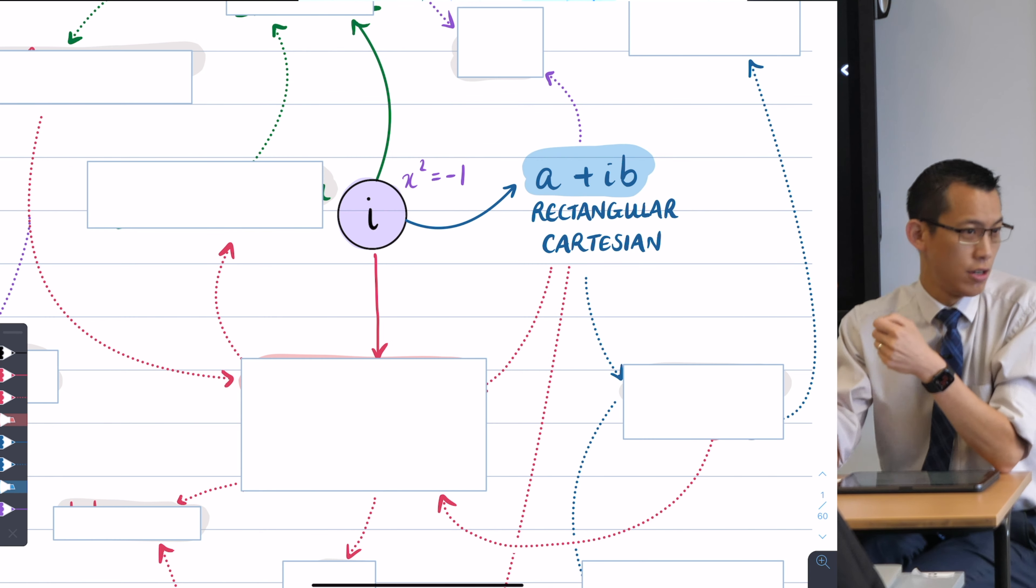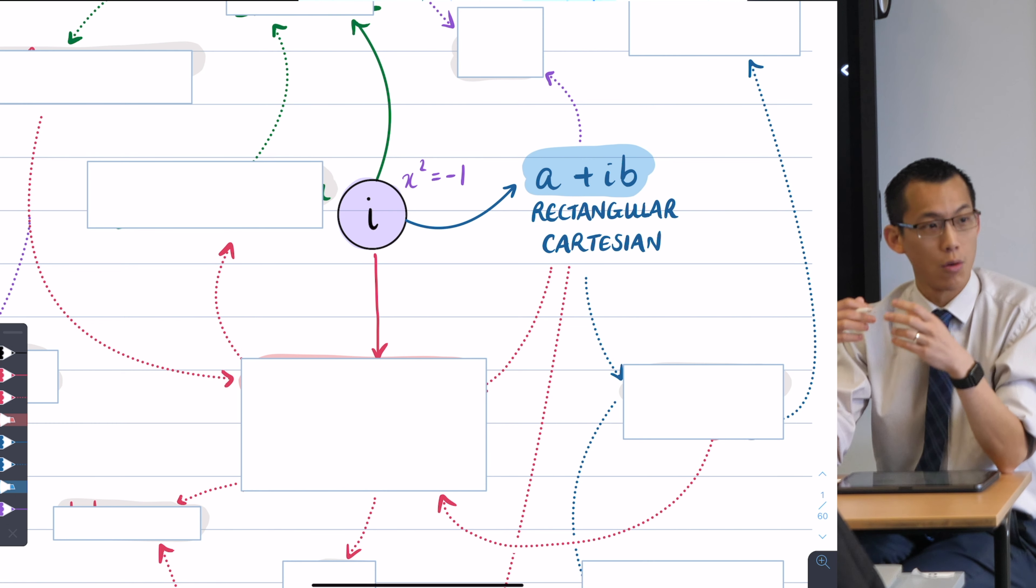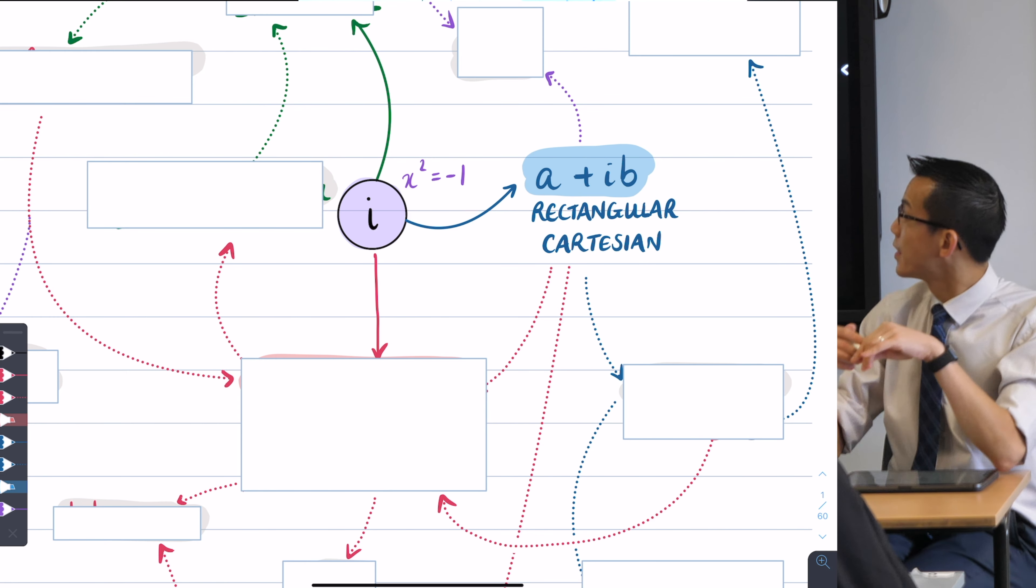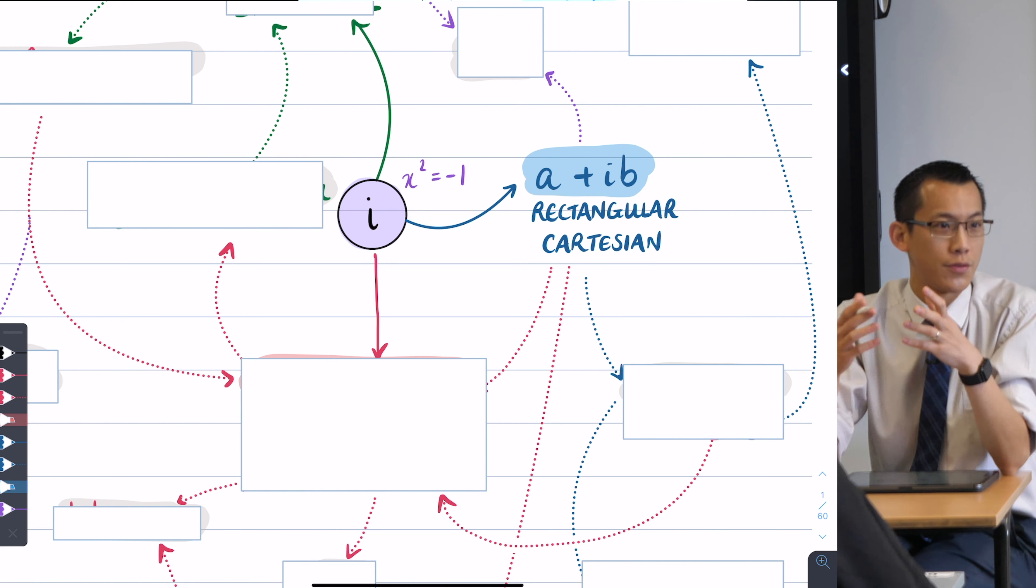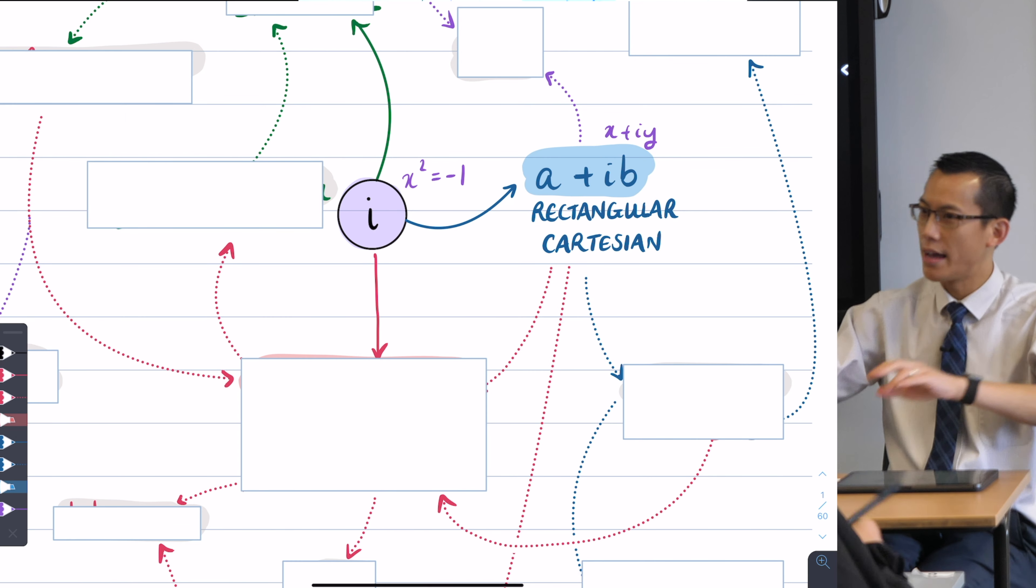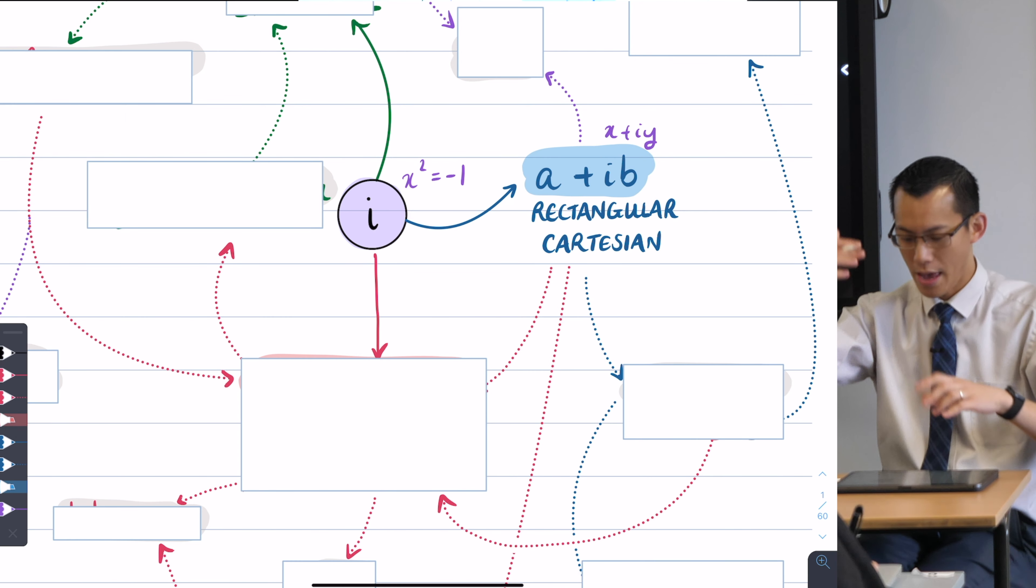And we introduced a couple of names here, right? We called these rectangular, the rectangular form of a complex number, because when you put them onto, like try and draw where they are, you get a rectangle. We also called them the Cartesian form, and we often write them as x plus iy to reference that fact. The x and the y, they tell you where you are horizontally and vertically.